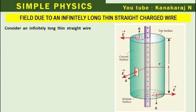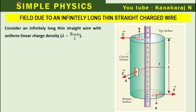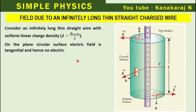Consider an infinitely long thin straight wire with uniform linear charge density lambda, which equals q enclosed divided by L. On the plane circular surface, the electric field is tangential and hence there is no flux.